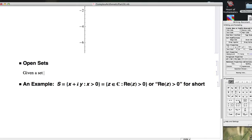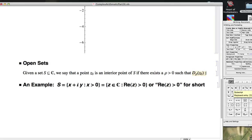Given a set S, that's a subset of the complex plane, we say that a point z is an interior point of S if there exists an open disk. Well, let's phrase it as there exists a ρ greater than 0 such that that open disk of radius ρ centered at z. Actually, let's call this point z₀ such that the open disk of radius ρ centered at z₀ is a subset of S.